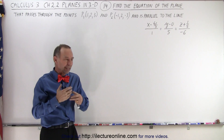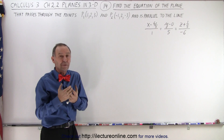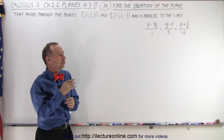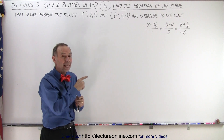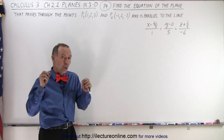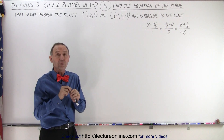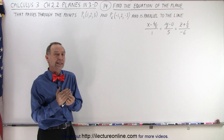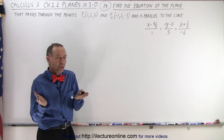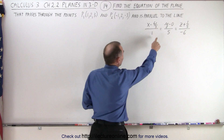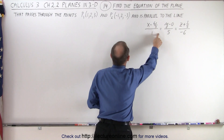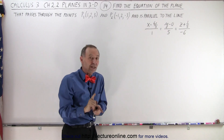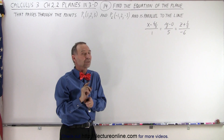Remember that we can get the equation of a plane if we find a perpendicular vector. So, if the line is parallel to the plane, and we're given two points on the plane, we can create a second vector which is also parallel to the plane. Then, when we take the cross product between the vector from this line and the vector from these two points on the plane, we get a vector that's perpendicular to the plane.